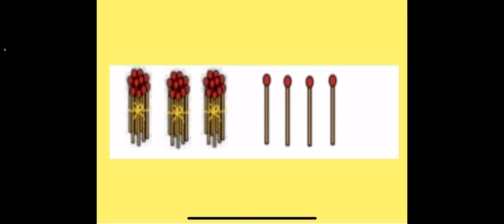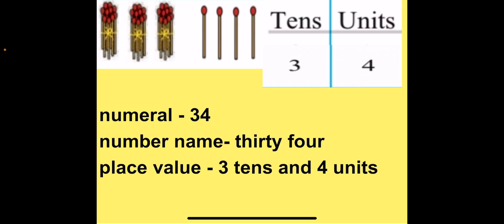Now when we add 1 more unit to number 33, we get 3 tenths and 4 units. So our next number is 34. The number after 33 is 34. The number name for 34 is THIRTY-FOUR. The place value for 34 is 3 tenths and 4 units. So the number is 34.